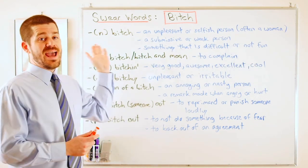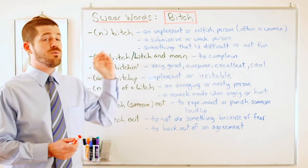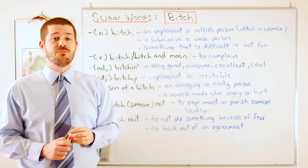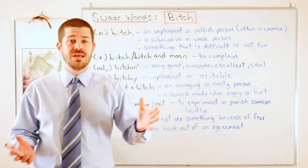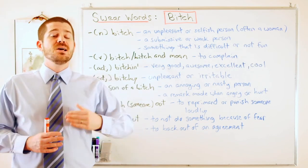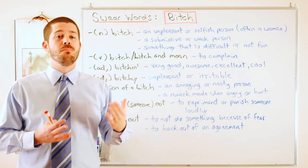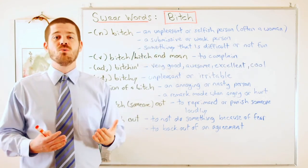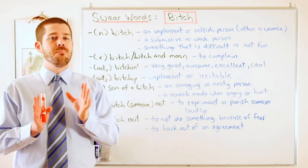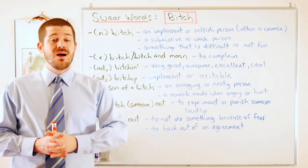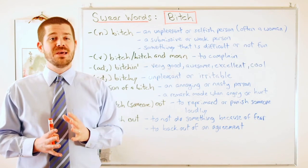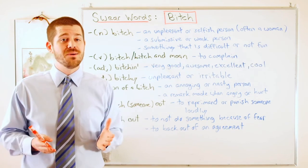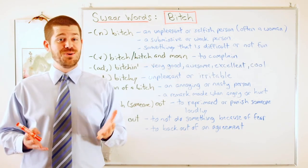The first usage is as a noun. We've got three different definitions. The first one is an unpleasant or selfish person — often a woman. If I say 'she's being a real bitch,' that means she's being unpleasant, she's not being nice. But if you say that to a woman, that is a really big insult — it's incredibly rude. Expect her to punch you in the face because it's really not nice.